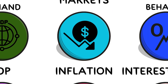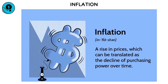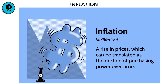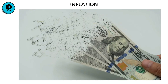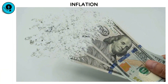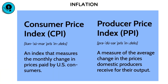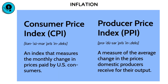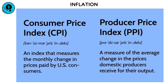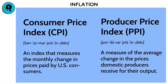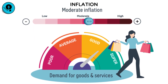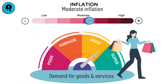Inflation is the general rise in prices across an economy over time, which reduces the purchasing power of money. When inflation occurs, each dollar buys fewer goods and services than before. Economists typically measure it through indexes like the Consumer Price Index (CPI) or Producer Price Index (PPI). Moderate inflation is normal in a growing economy and can even encourage spending and investment.